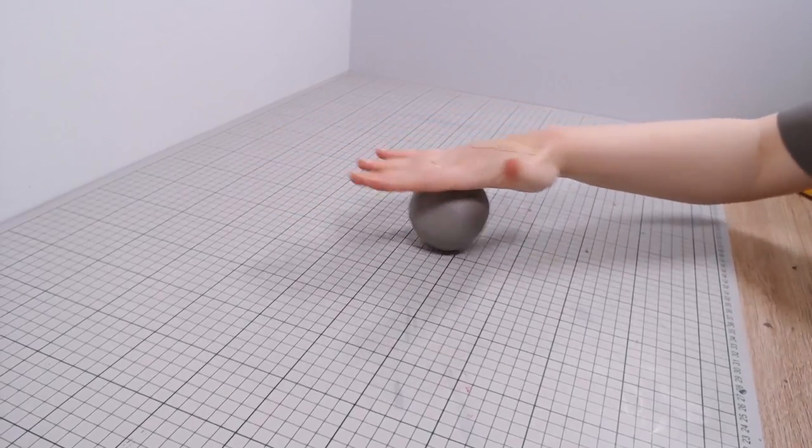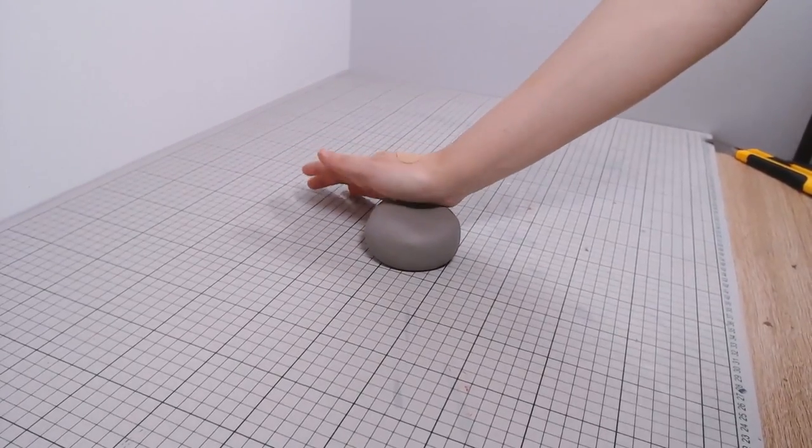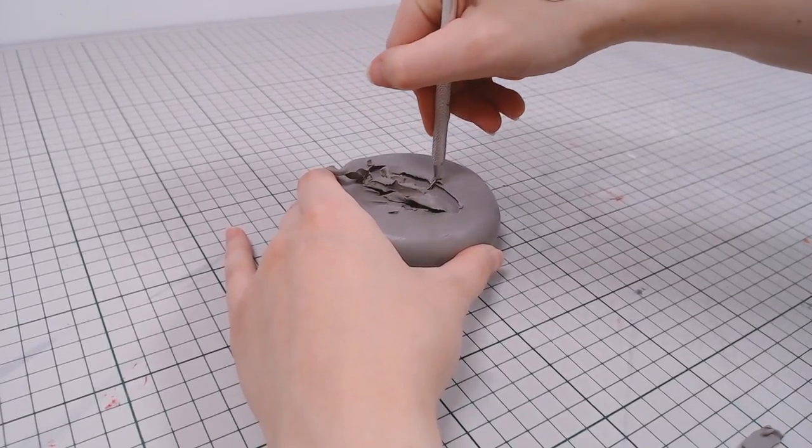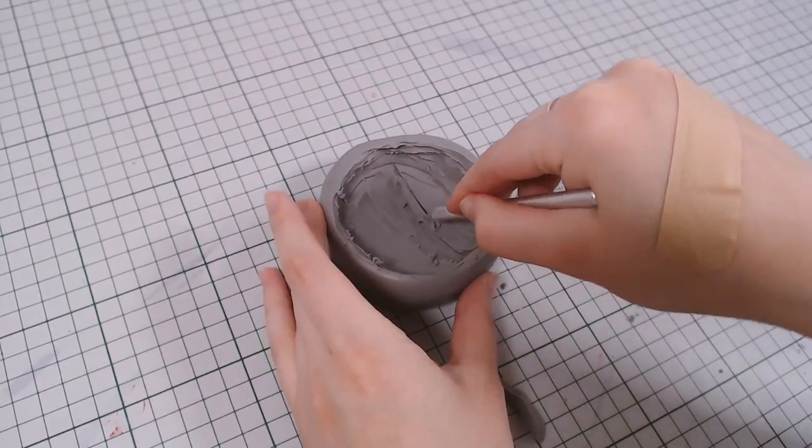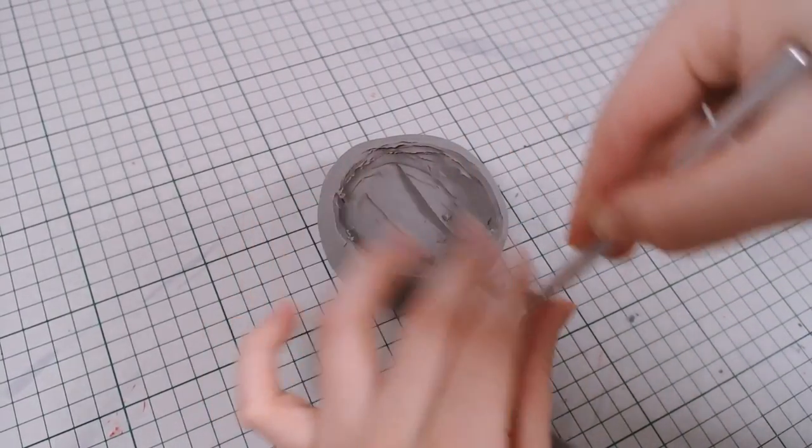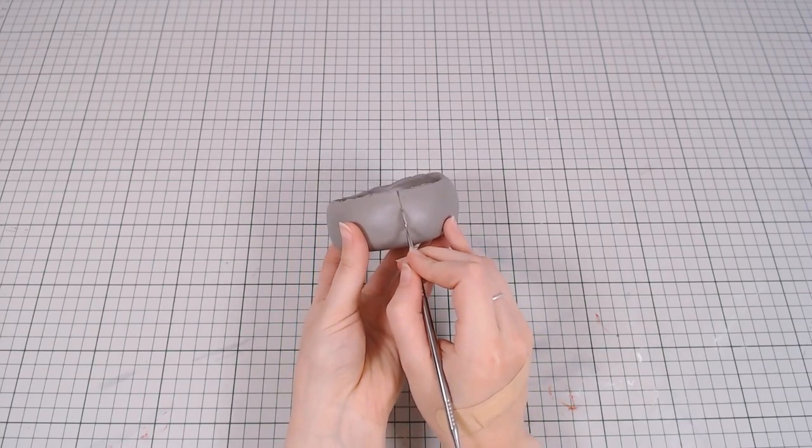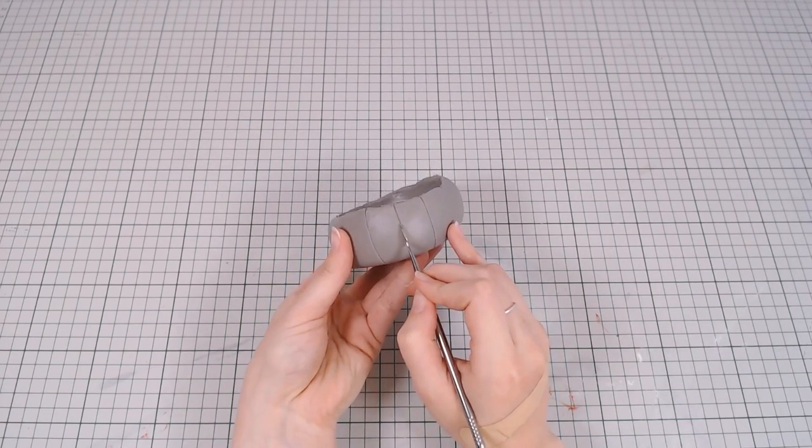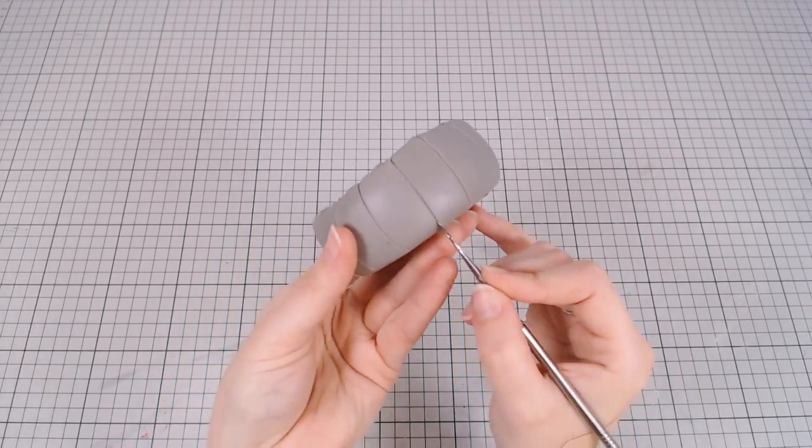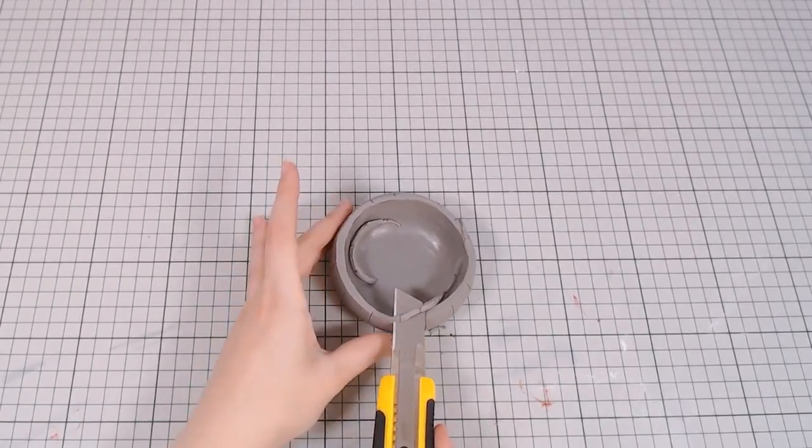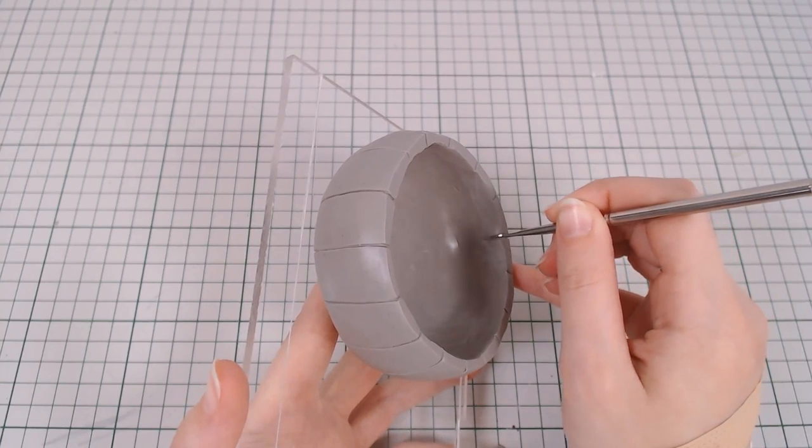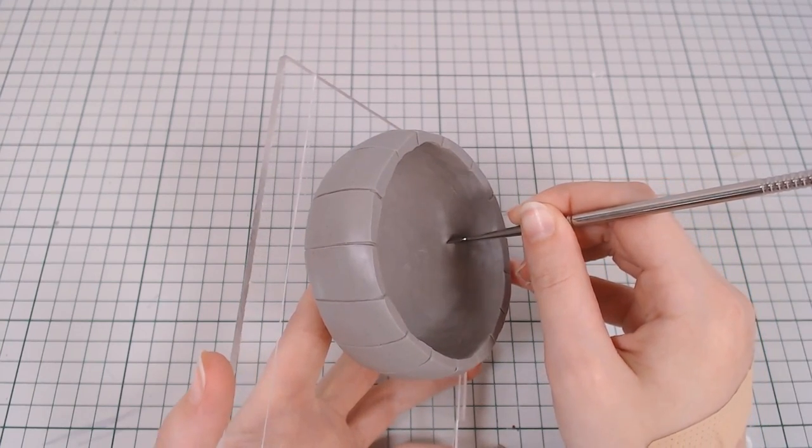I'm going to start by making the tub. I rolled out a big chunk of polymer clay and then scooped out the insides. It's supposed to be a barrel tub, so I'll draw on the lines of the planks. Cut off the top for a more even edge and go over everything with a silicone tool to make the wood grain texture.